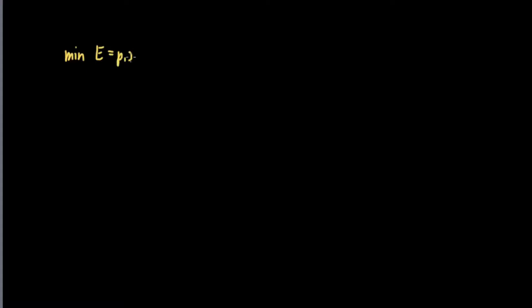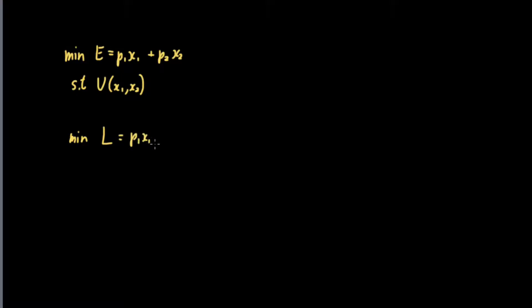So our objective would now be to minimize expenditure, which is equal to P1·x1 plus P2·x2, subject to the utility constraint. In this video, we'll use the Lagrangian method of solving this. So here we want to minimize, and using the Lagrangian, L would be equal to P1·x1 plus P2·x2 plus lambda times open parentheses U minus the utility function x sub 1, x sub 2.